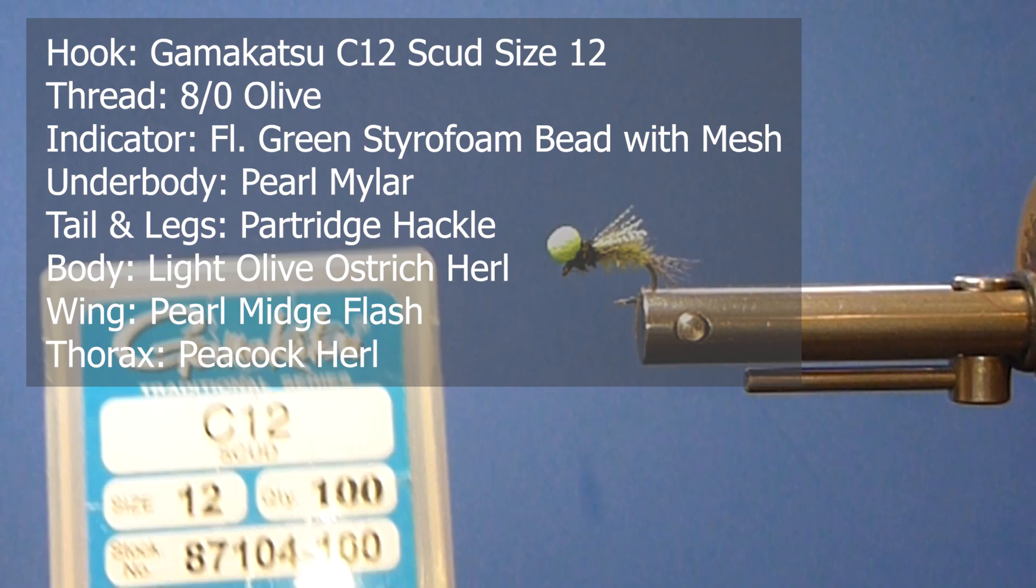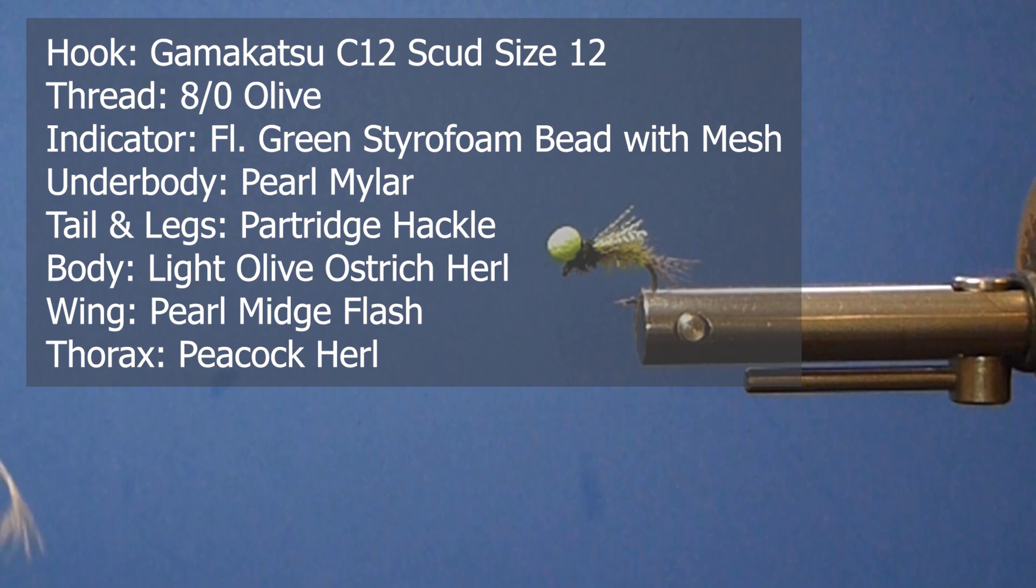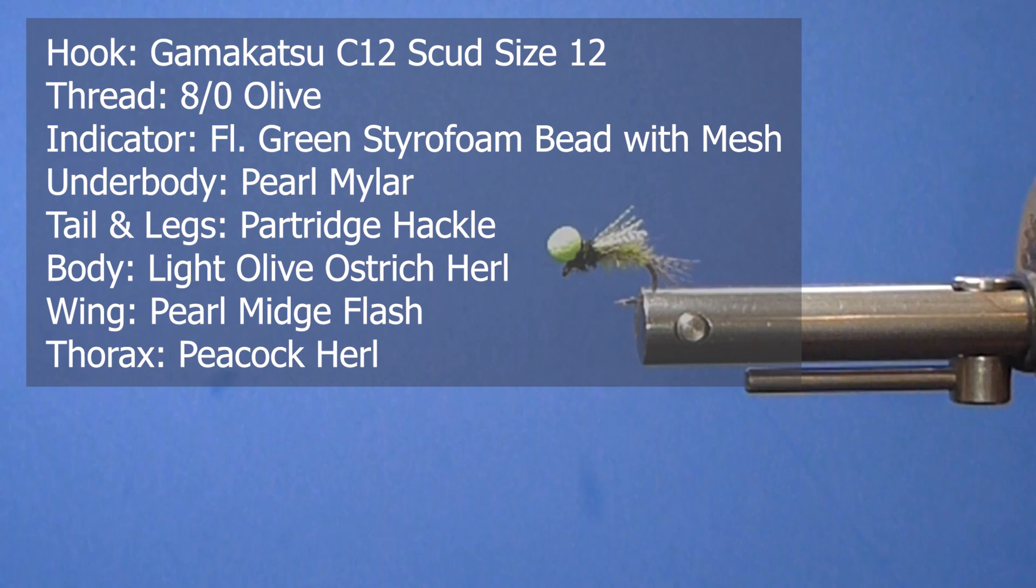So let's go over the materials. I'm going to be using a continuous curve hook. I'm using a C12 Gamakatsu here, size 12. You can go to 14s on this fly too.